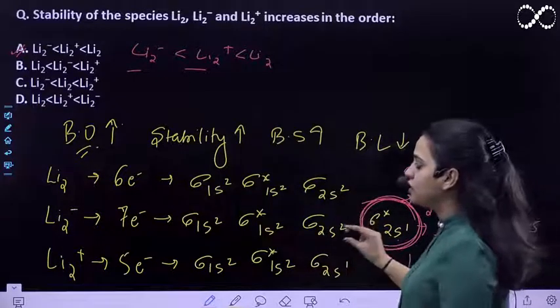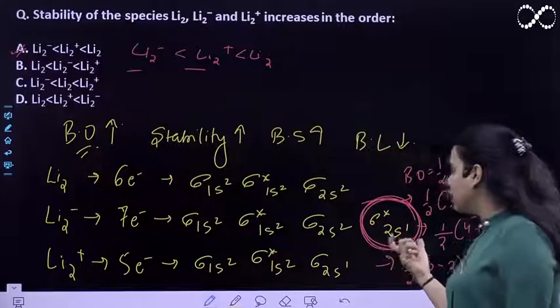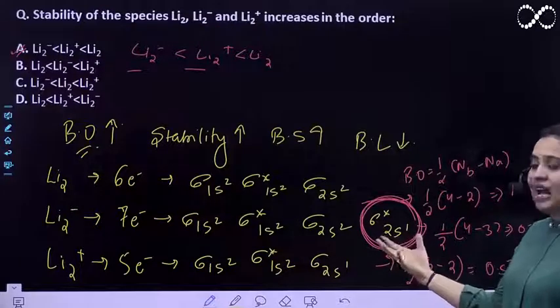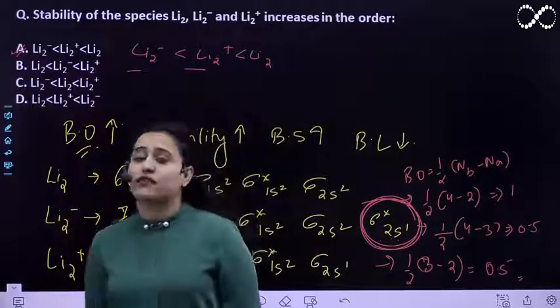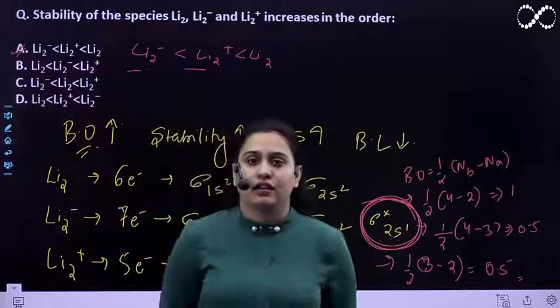This is negatively charged, then this is positively charged, and the incoming electron is coming in the anti-bonding, so it makes it more unstable. It will face more repulsions, therefore the answer is A. Thank you.